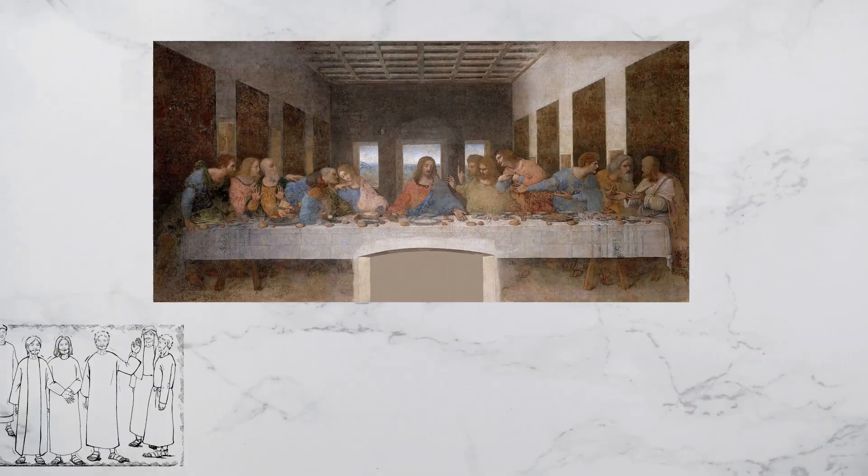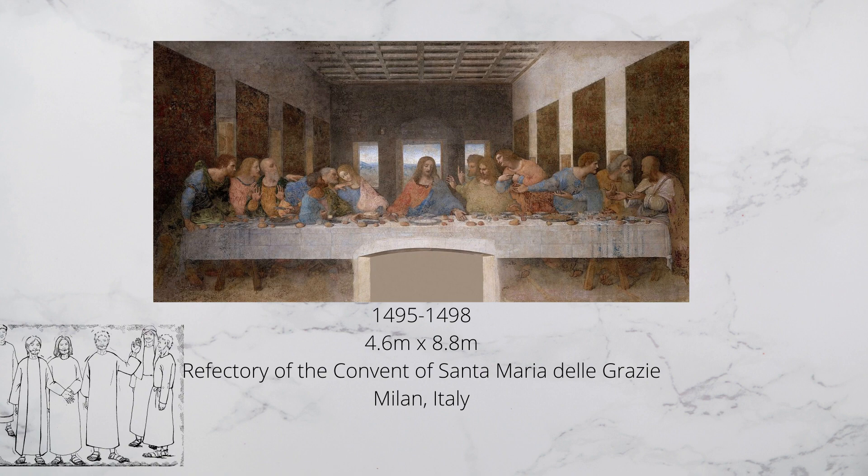One point perspective was used by da Vinci, which includes all the lines converging in one position, known as the vanishing point. This technique has been used to highlight the substantial significance and central position of Christ in the painting.